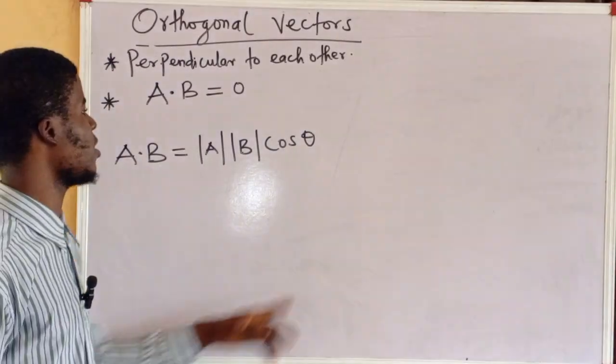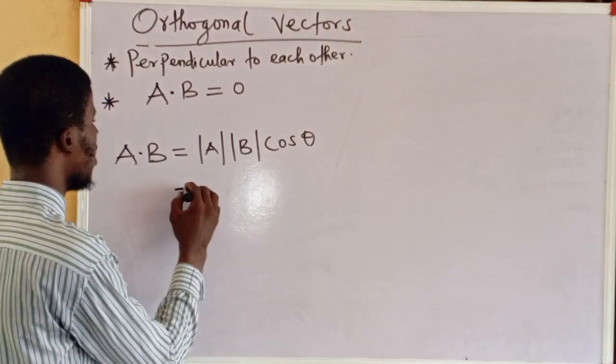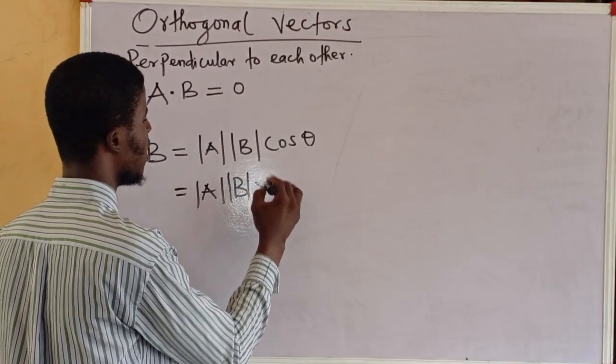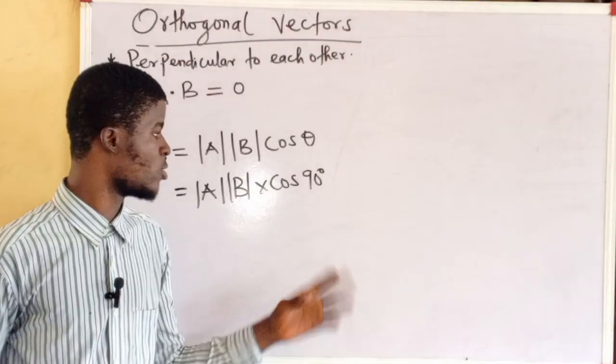In this case now, we are saying that the angle between them is 90 degrees. That means we have the modulus of A into the modulus of B times cos 90, times cos 90 degrees.